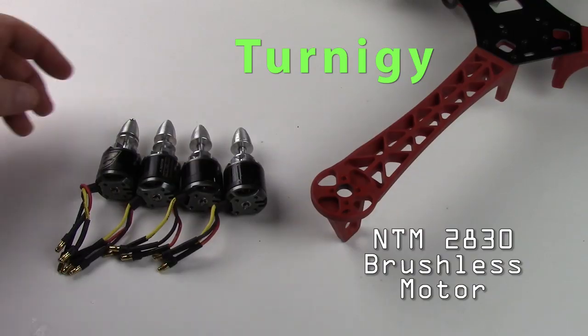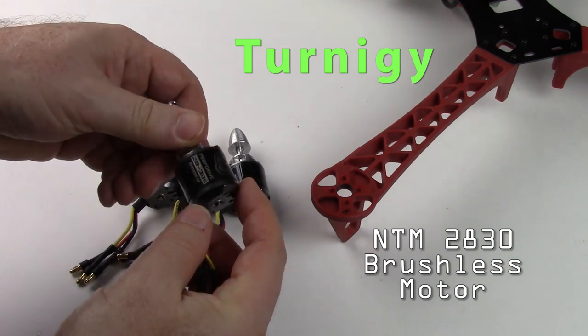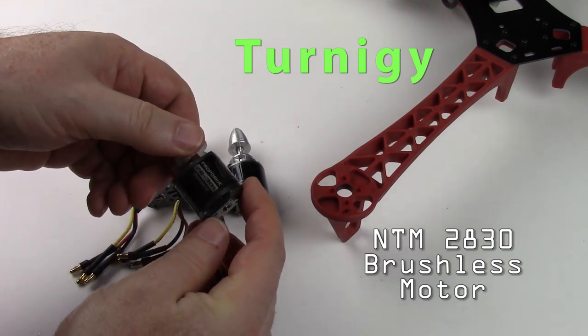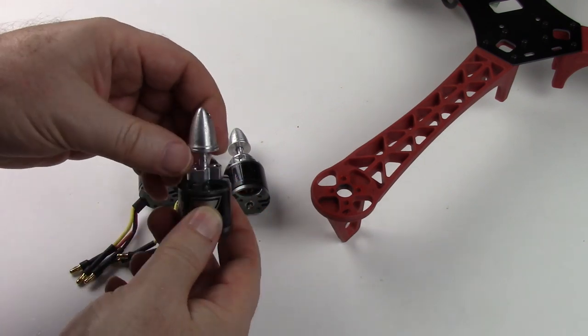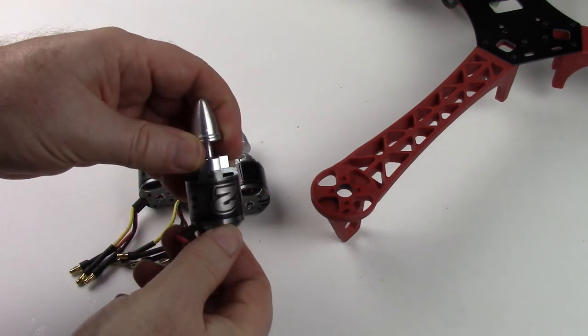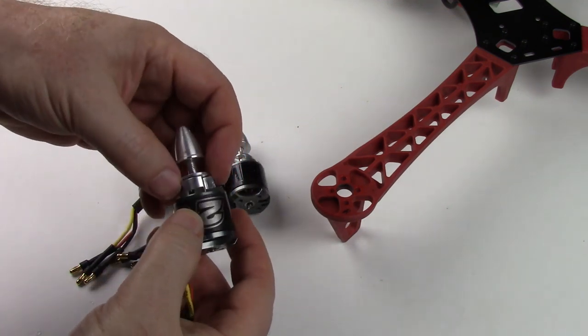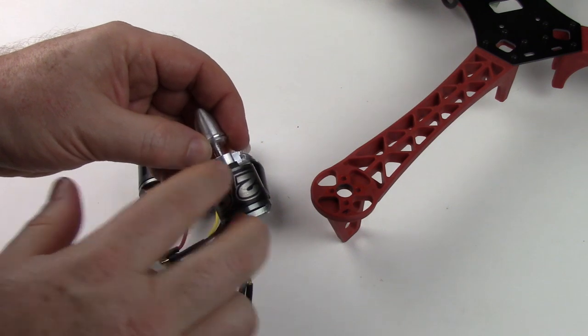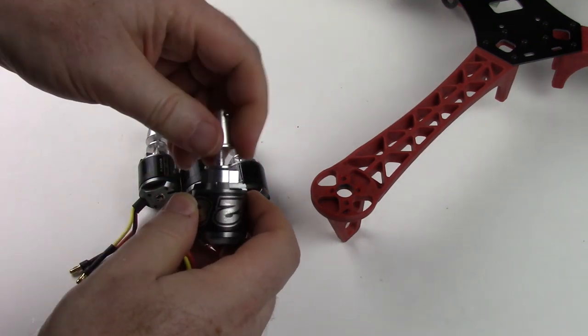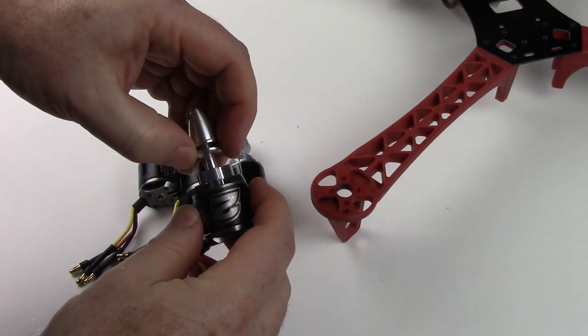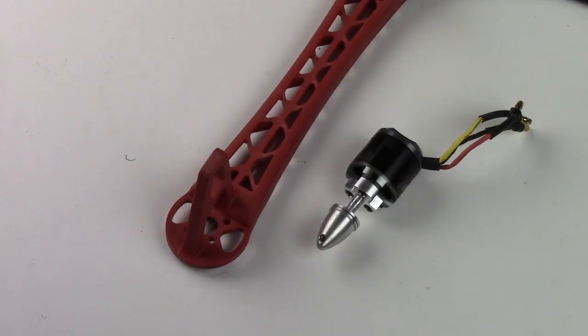So there you go, there's the power board attached. The next thing we'll do is we'll put the motors on. So the motors I'm using for this project are the Turnigy NTM 2830 prop drive. They spin at 800 kV. I like them because they're a nice inexpensive, fairly reliable motor, and instead of having a main shaft they have a short shaft and a cast aluminum top that I think is a lot more secure for holding propellers.